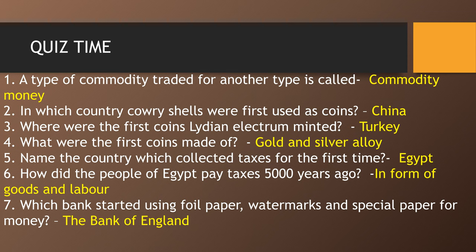Quiz time. A type of commodity traded for another type is called commodity money. In which country were cowrie shells first used as coins? That is China. Where were the first coins minted? In Turkey. What were the first coins made of? Gold and silver alloy. Name the country which collected taxes for the first time — Egypt. How did the people of Egypt pay taxes 5000 years ago? In the form of goods and labor.